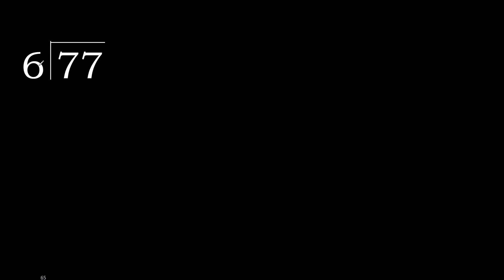77 divided by 6. 7 is not less, therefore with 7. 6 multiplied by which number is nearest to 7 but not greater? 6 multiplied by 2 is 12 — that is greater. 6 multiplied by 1 is 6. 7 minus 6 is 1.